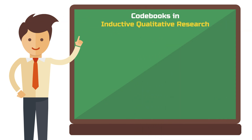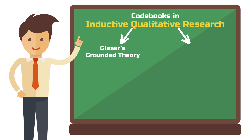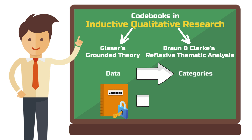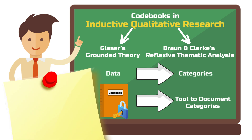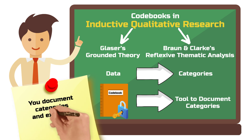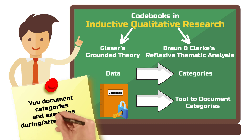Codebooks in inductive qualitative research. Codebooks may also be used in inductive qualitative research, such as Glaserian grounded theory or reflexive thematic analysis. The main difference here is that you are not looking for predefined categories. Instead, you start with a blank canvas and create all categories based on your data. The codebook is simply a tool to document your categories, helping you and others — such as collaborators or reviewers — to better understand how the categories were built.